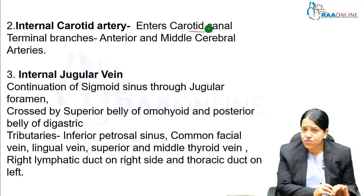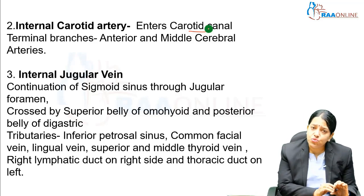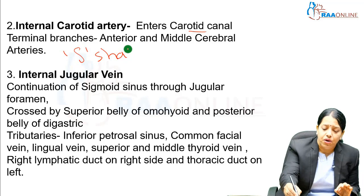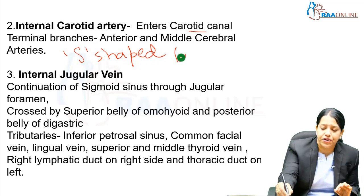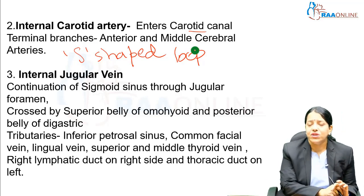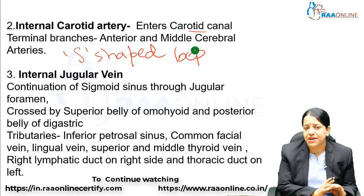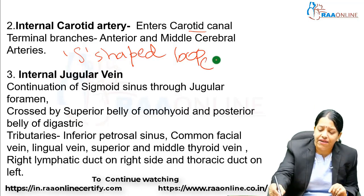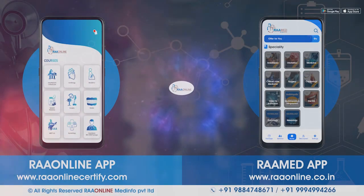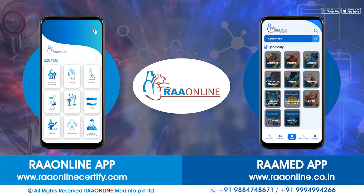The internal carotid artery also has a relation with the cavernous sinus — it passes through the cavernous sinus, forming an S-shaped loop, then comes out. Once it enters the carotid canal, it is also related to the foramen lacerum, which it crosses superiorly before entering the cavernous sinus. These are important relations of the internal carotid artery.